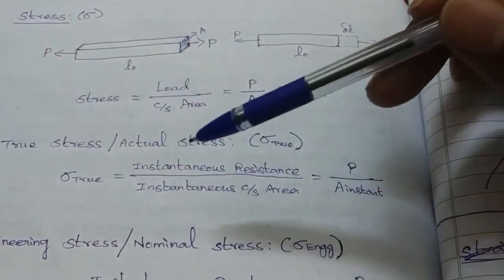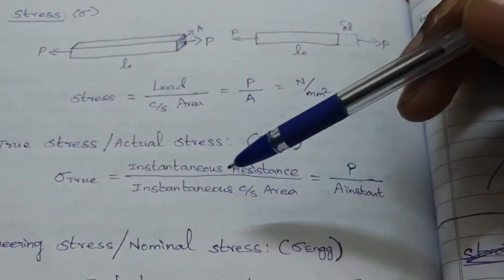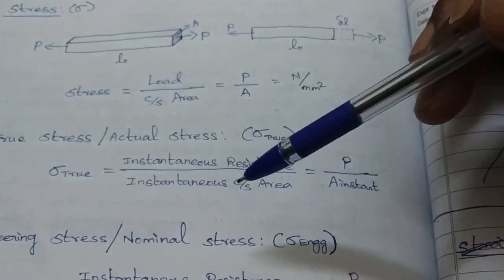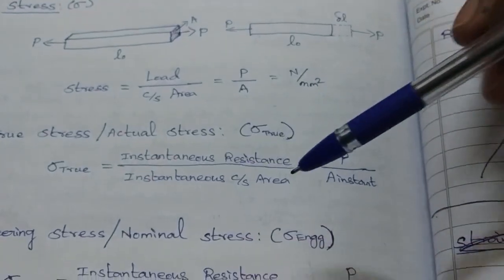True stress is the instantaneous resistance divided by the instantaneous cross-section area.